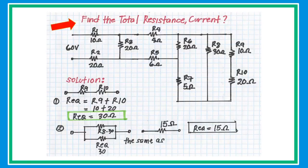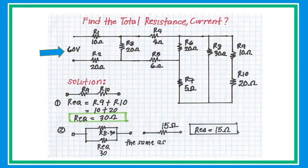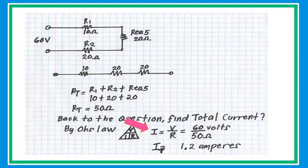Going back to the original problem: find the total resistance and current. Given that our voltage is 60 volts and using Ohm's law, I equals V over R, with 60 volts over 50 ohms, the total current is 1.2 amperes.